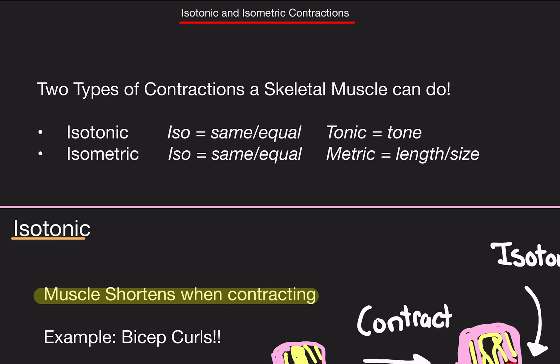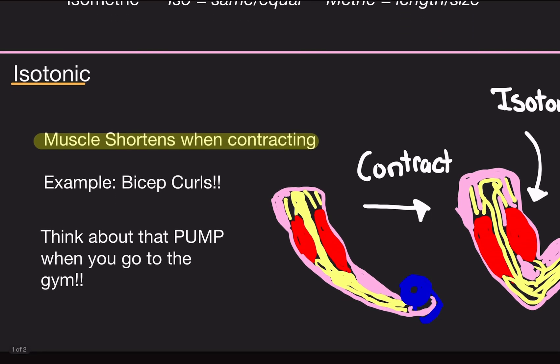Let's begin. The two types of contractions a skeletal muscle can do are isotonic contraction and isometric contraction. The prefix 'iso' means same or equal. 'Tonic' means tone, and 'metric' — think about length or size.